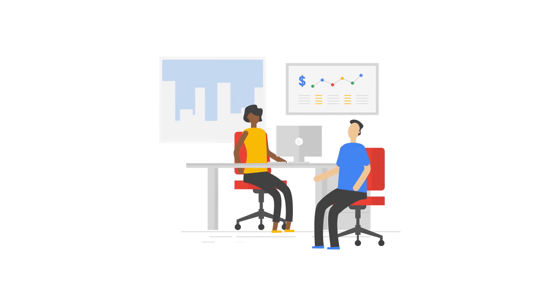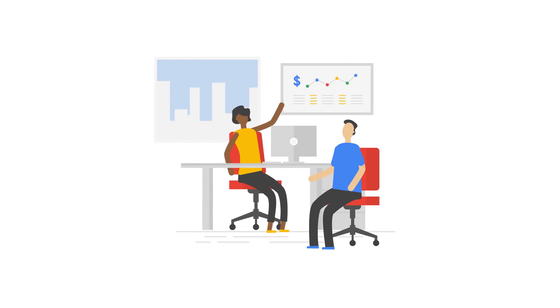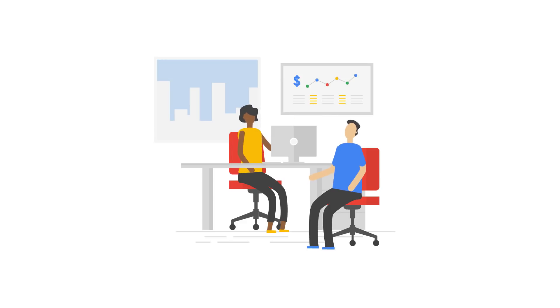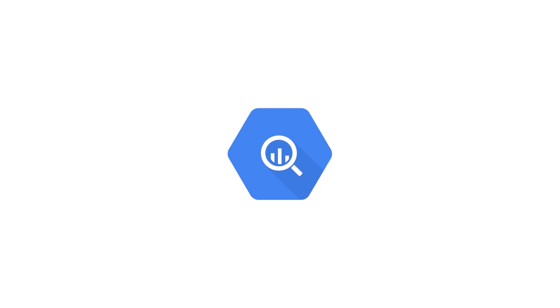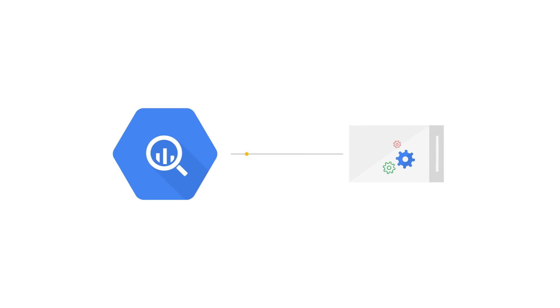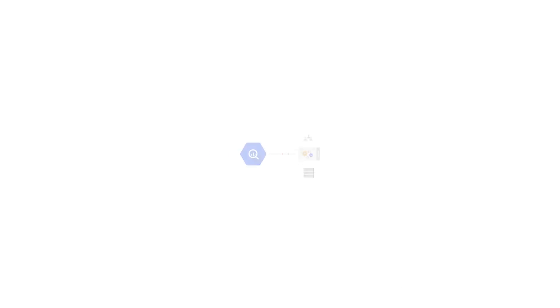Suppose you wanted to know which customers were likely to make a recurring direct deposit at your bank. You could use your data in Google BigQuery and quickly create a model predicting this outcome based on the input features you have.